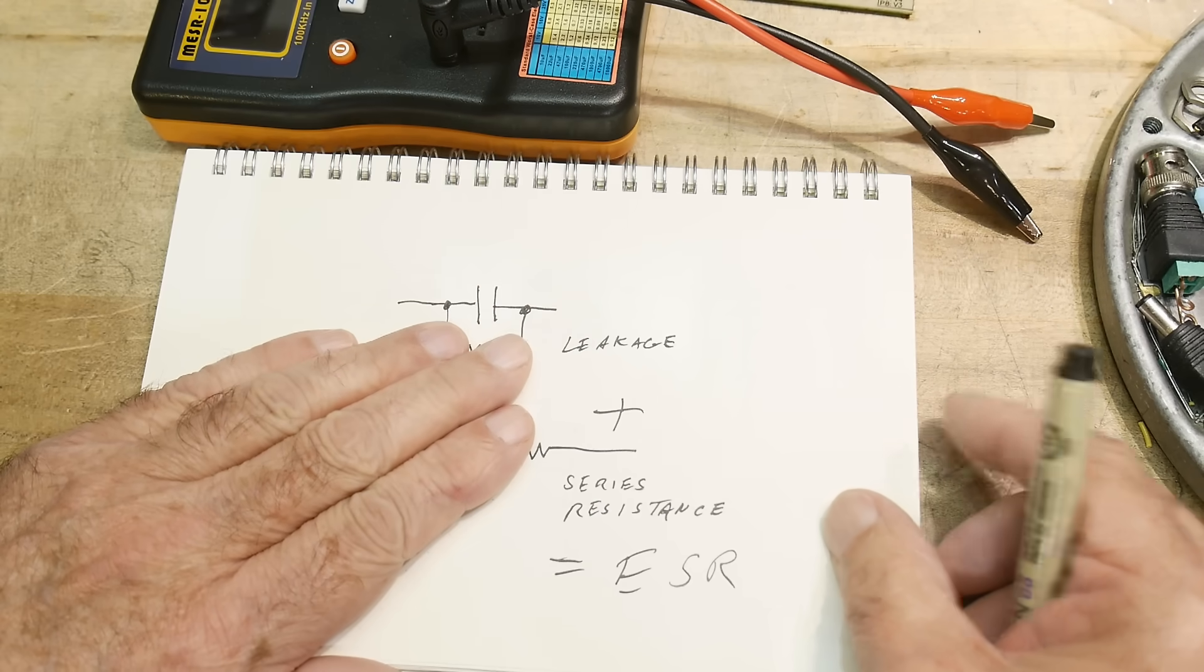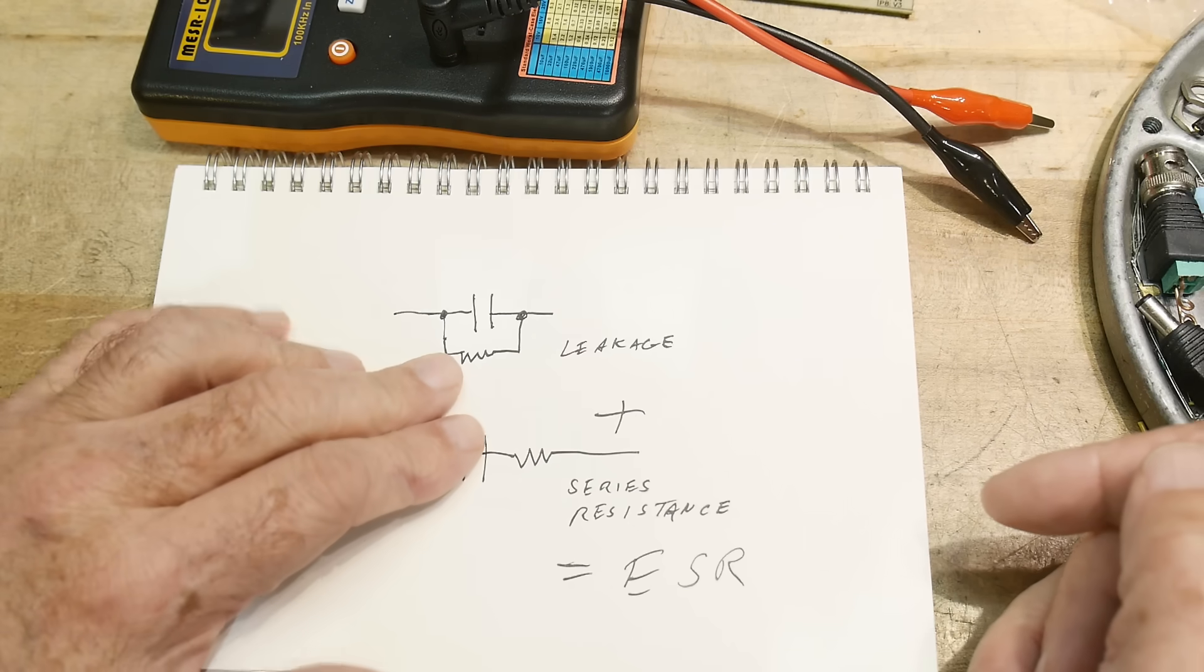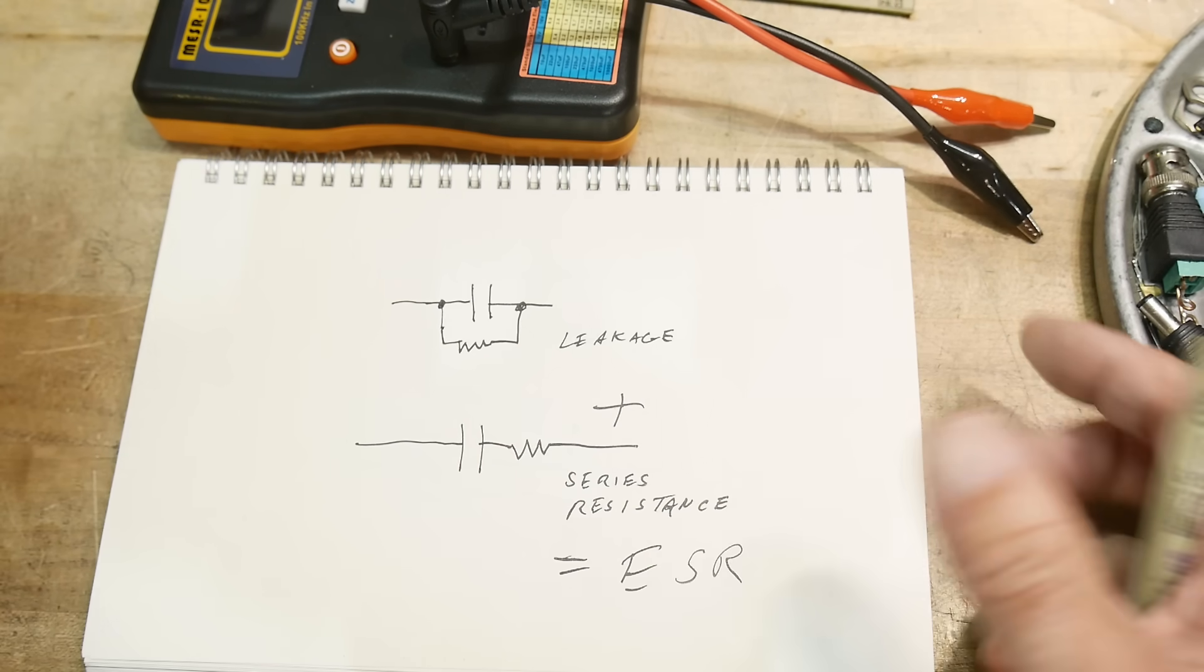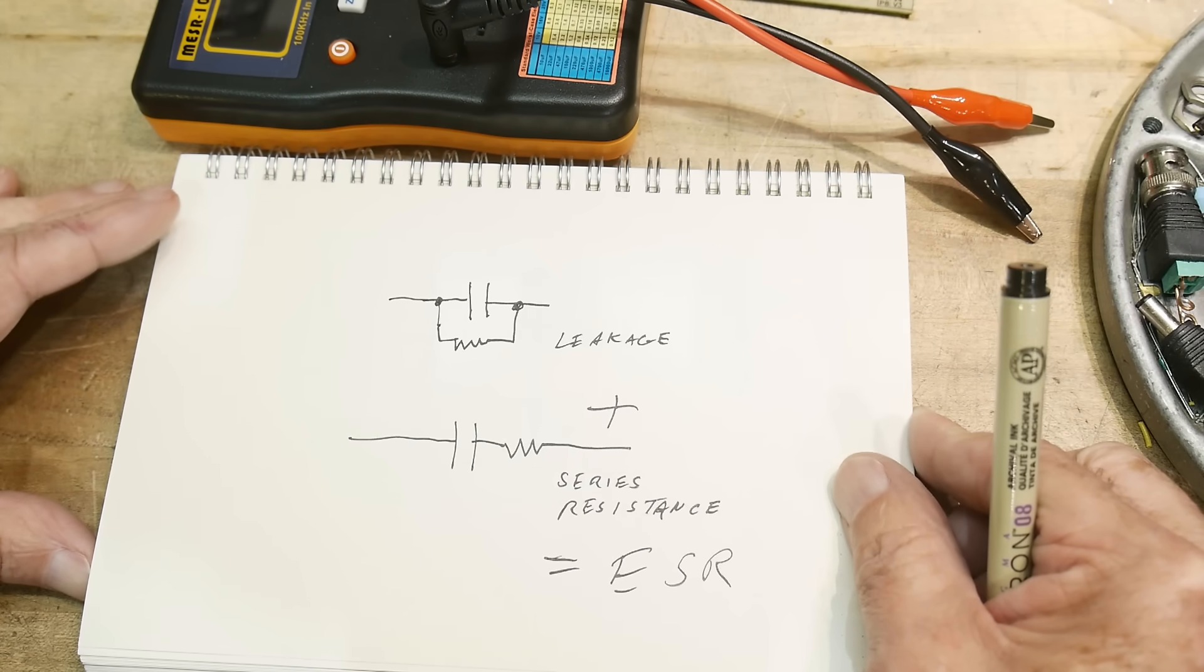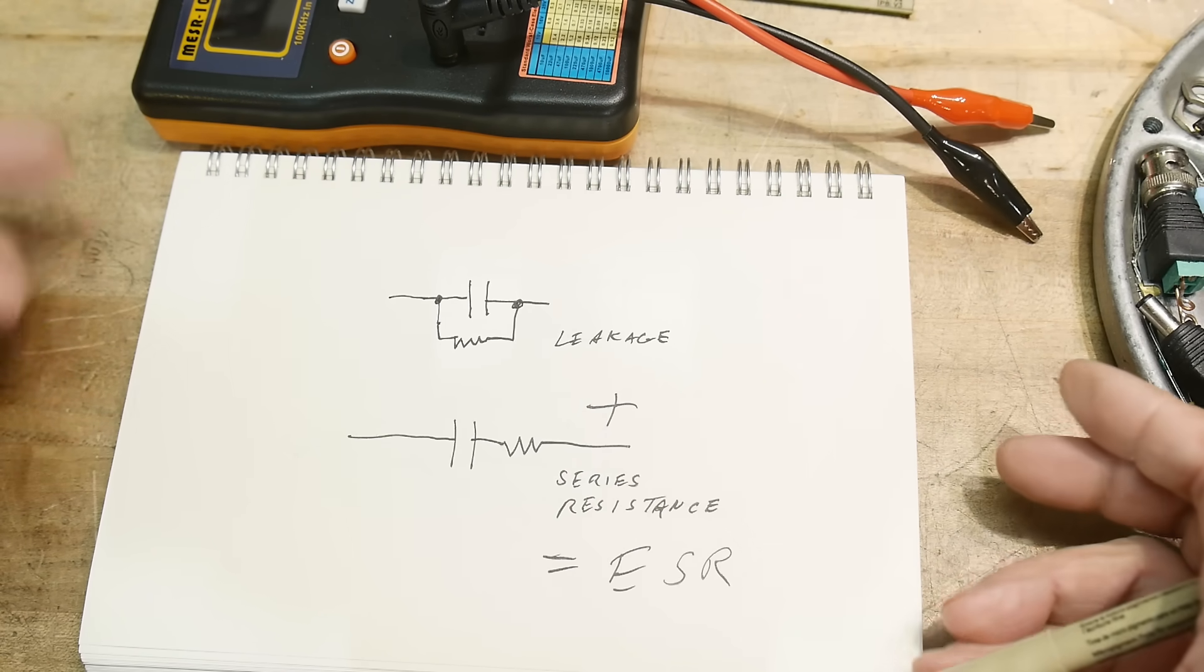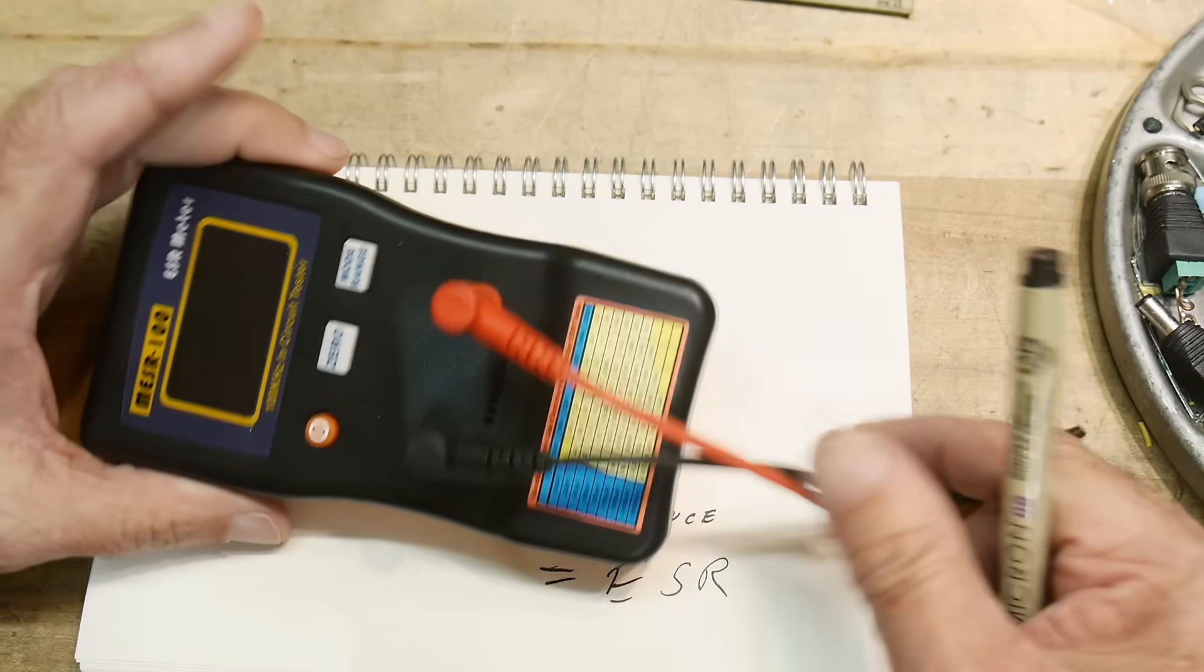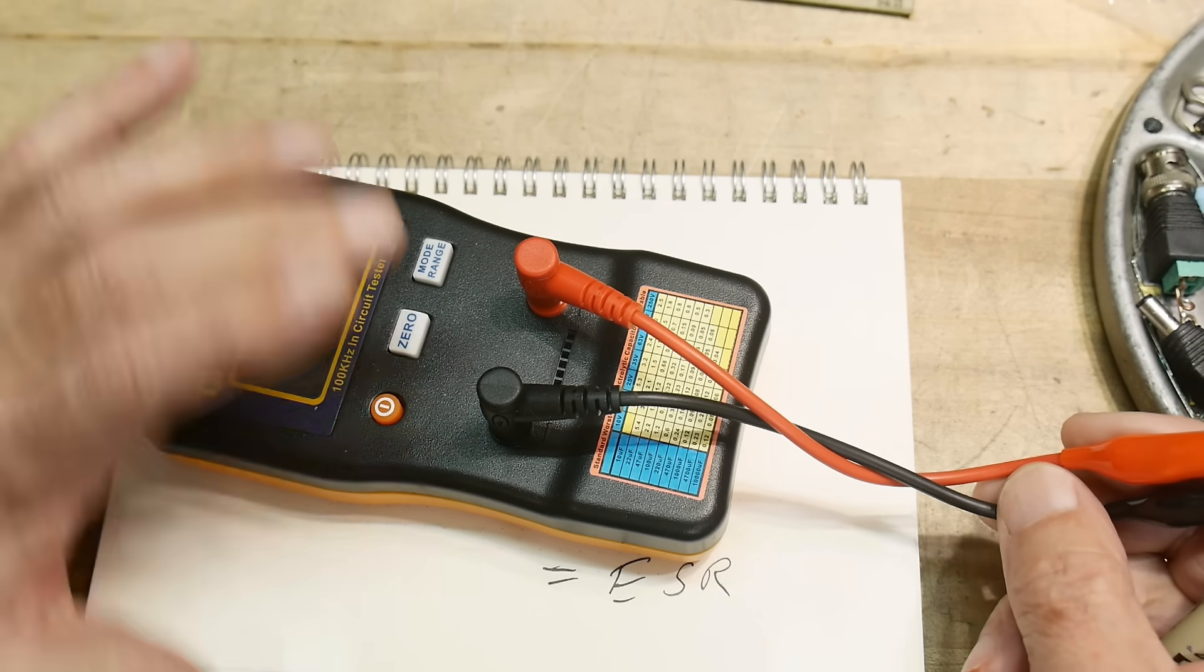ESR just kind of catches all the resistive natures of a capacitor that's not supposed to be there. Good capacitors, a perfect capacitor, would have none of these. It would have infinite resistance here and zero ohms here. So the worse the capacitor, the more resistance it has. So what this thing does is it tests the resistance. If it's a very low value, your capacitor is good. If it's a very high value, your capacitor is bad.